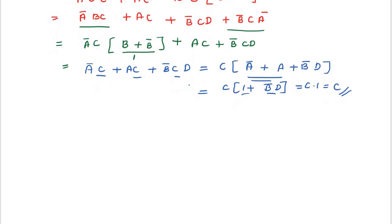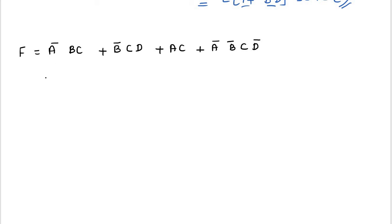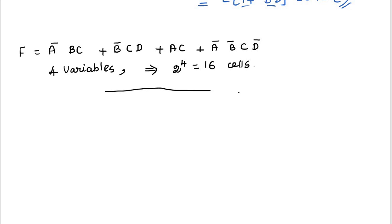Next, I am going to explain the same using K-map. The expression is F = A'BC + B'CD' + AC + A'B'CD'. There are four variables: A, B, C, D. Four variables corresponds to 2⁴ = 16 cells in the K-map. I am going to draw the K-map with 16 cells. Here AB, and here CD.